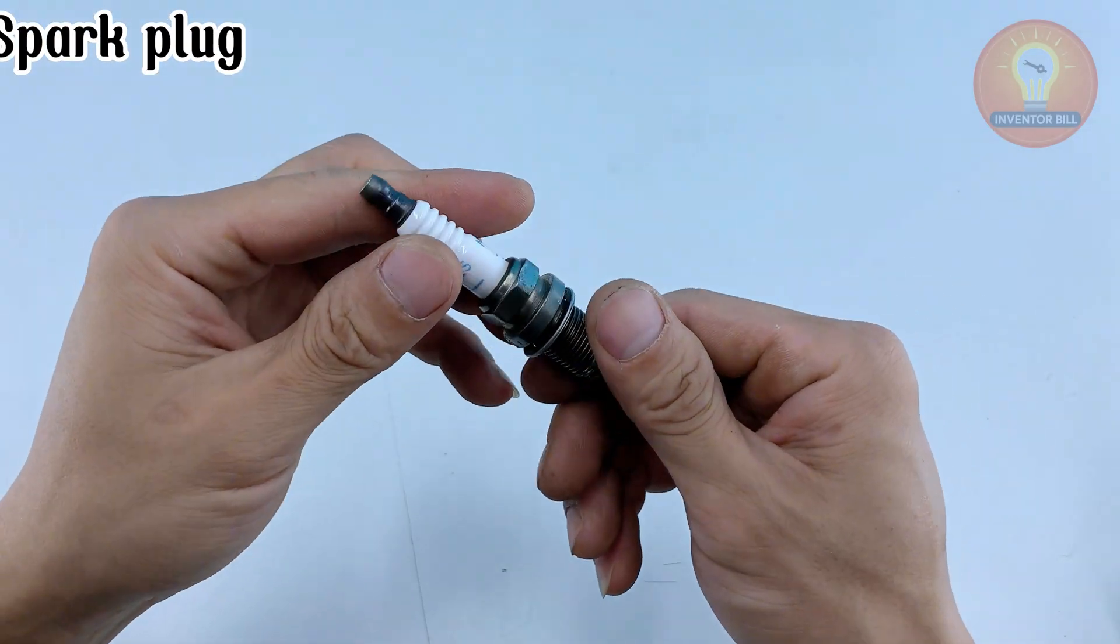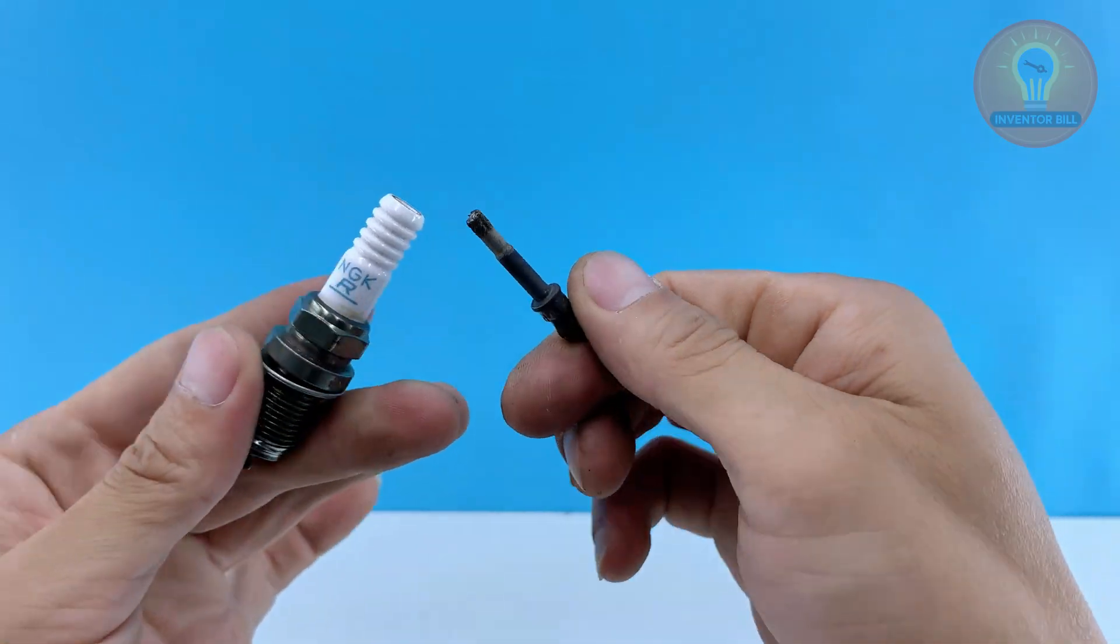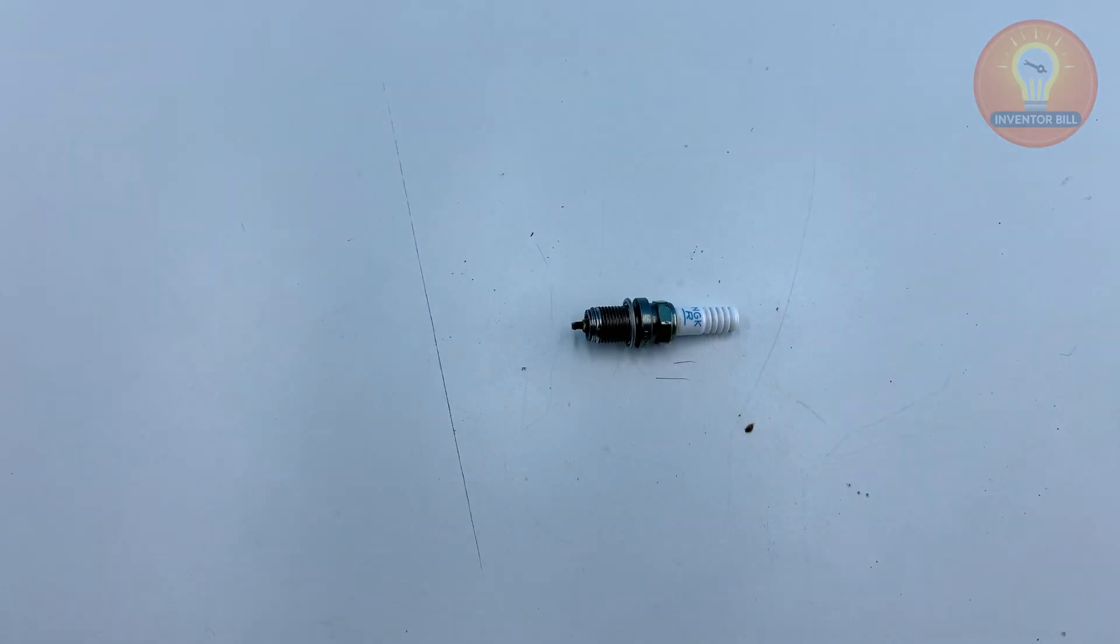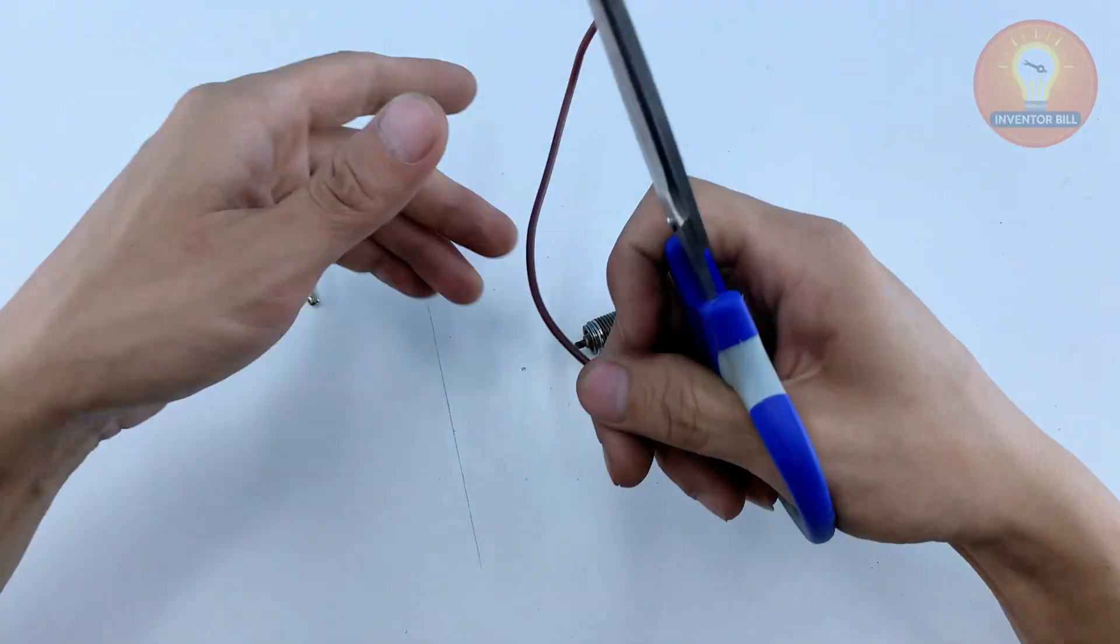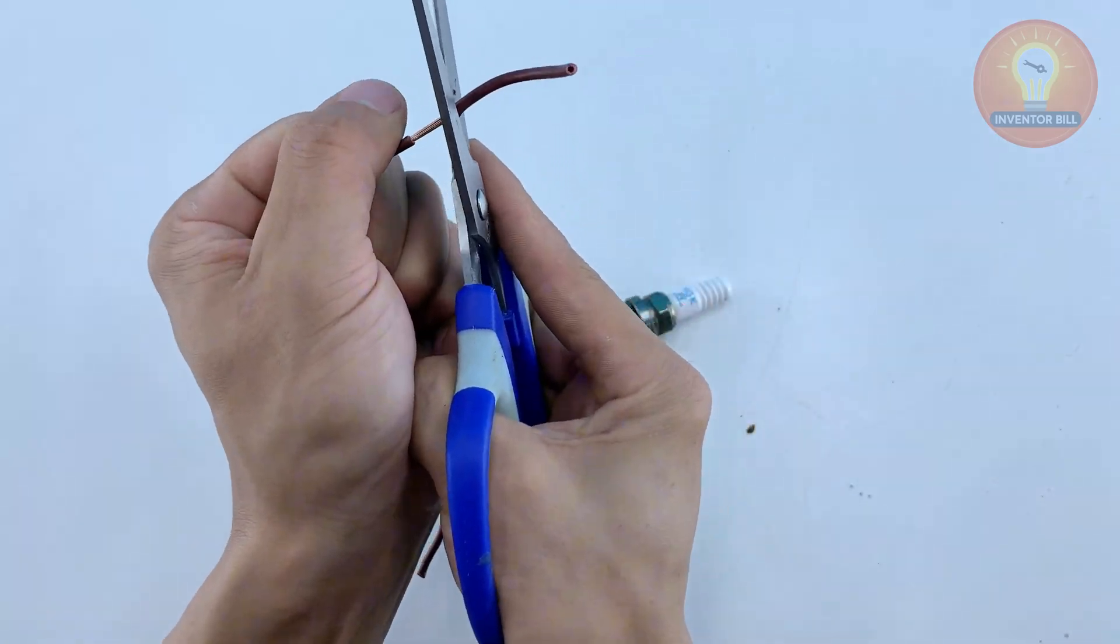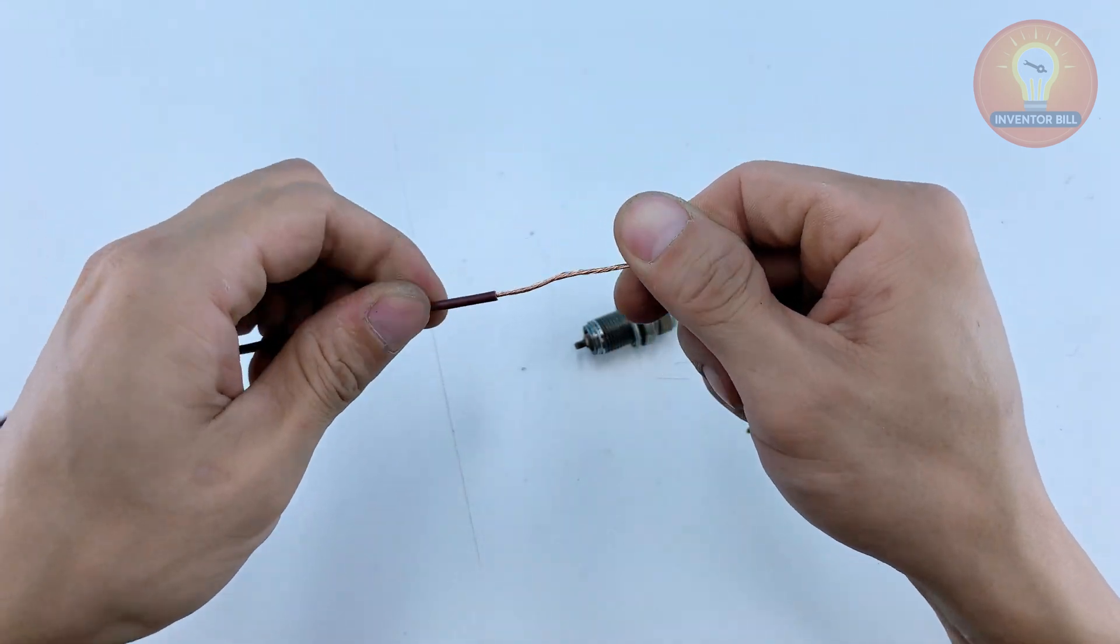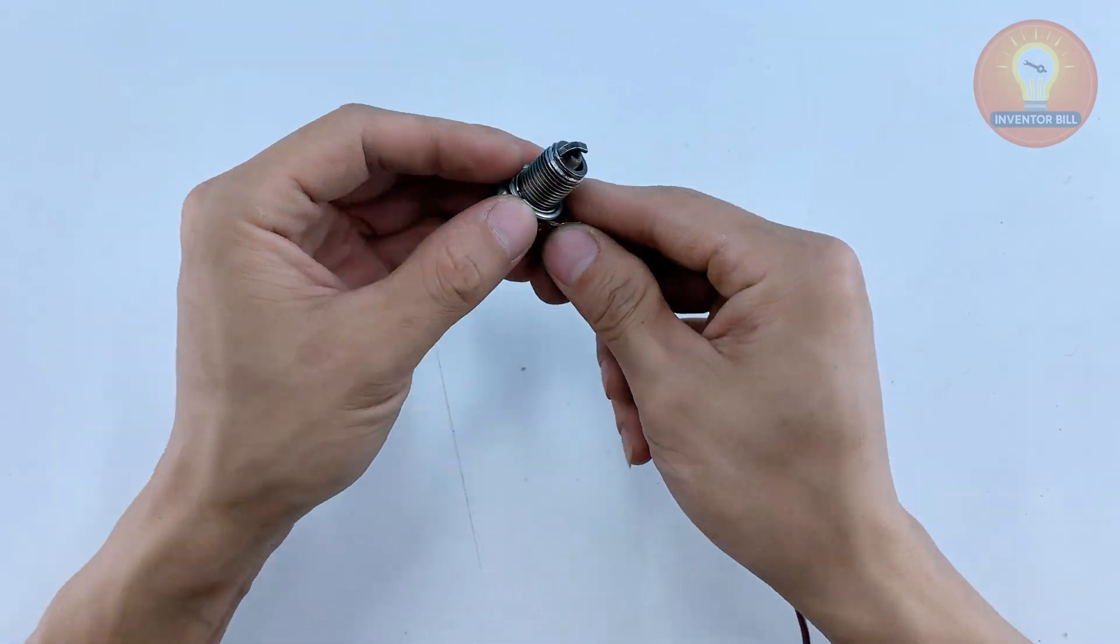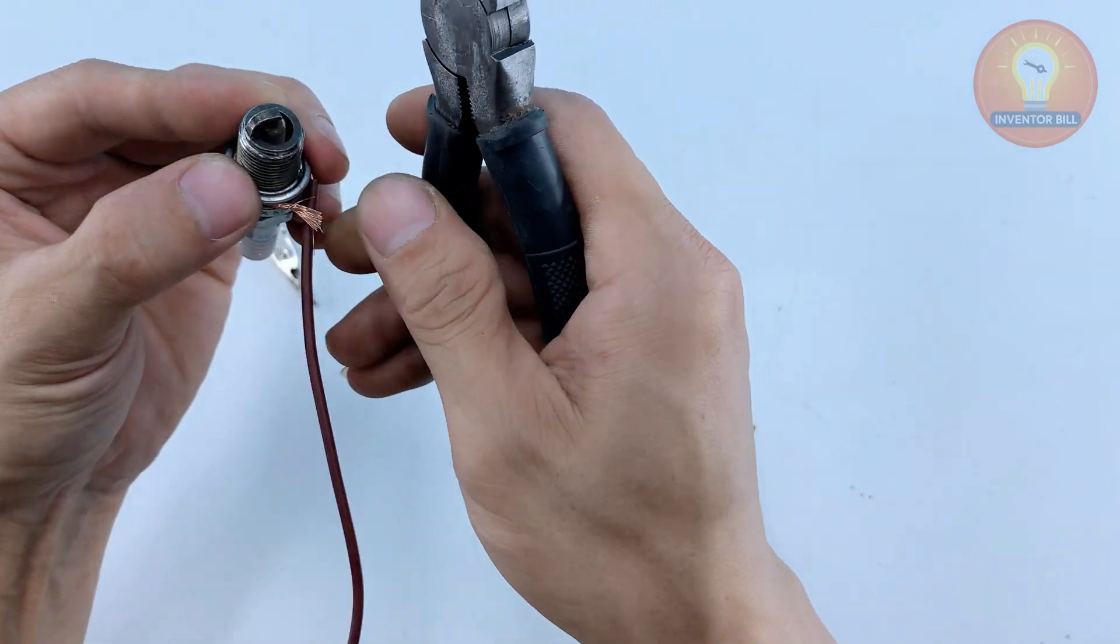To set up the power connection for our homemade soldering tool, take an old spark plug and remove the metal tip so the ceramic body is exposed. Grab a piece of electrical wire and strip both ends. Wrap one stripped end tightly around the metal base of the spark plug. Make sure the coil sits snug so you get a solid electrical path later.